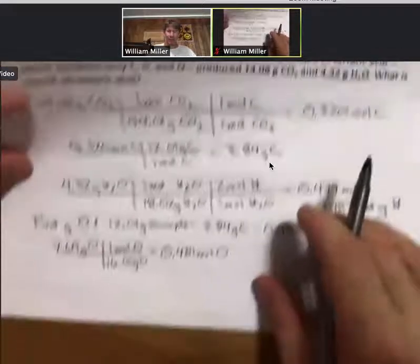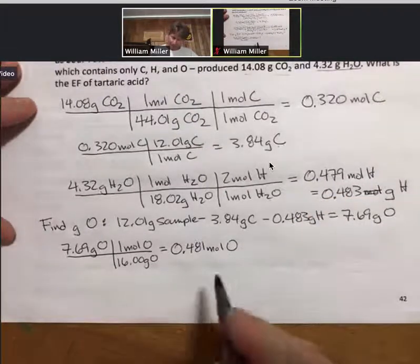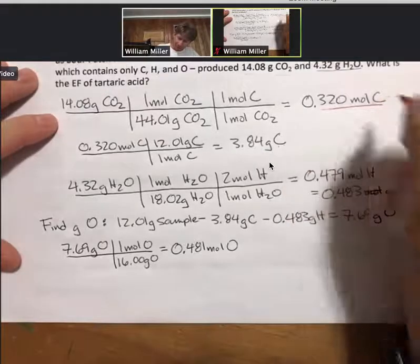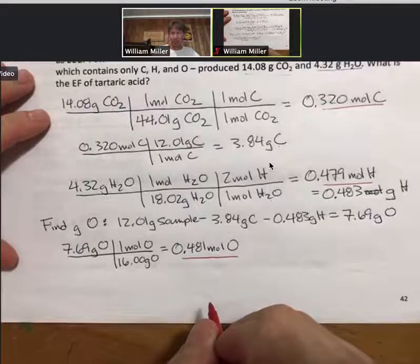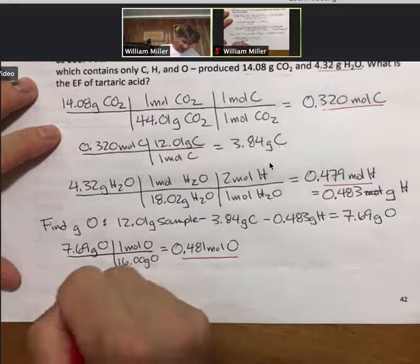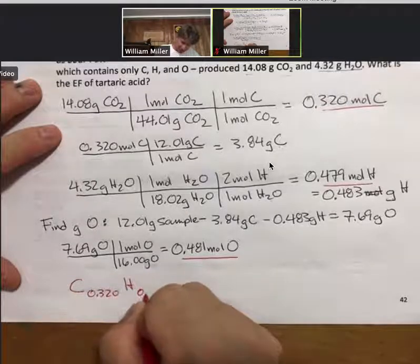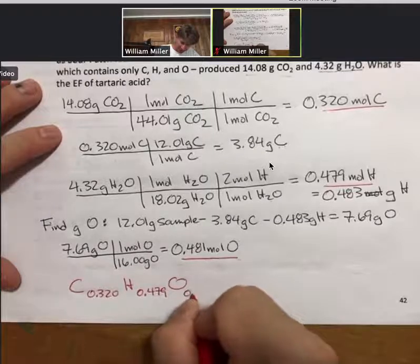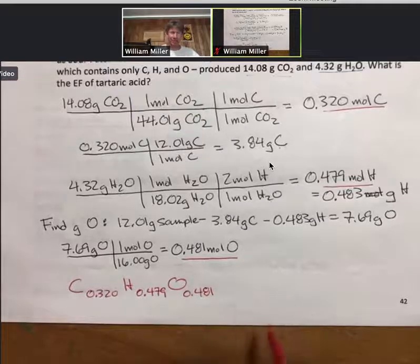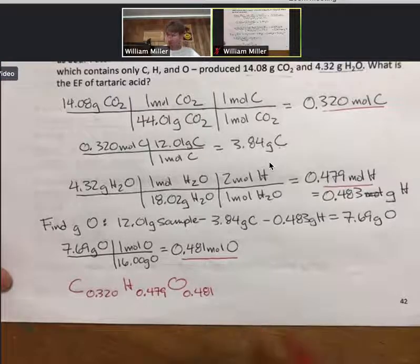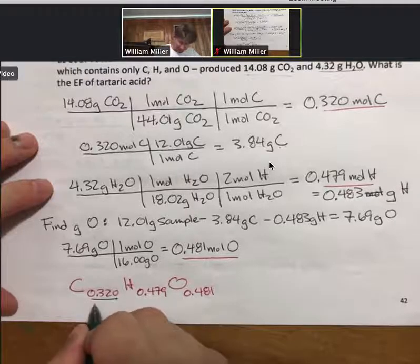Okay, so hearing no other questions right now, I'll keep going. So now we have moles of carbon, moles of hydrogen, and moles of oxygen. I'm going to organize myself here: C 0.320, H 0.479, O 0.481. I know these are not whole numbers, but at least I've got everything in the right place now because my next step is to then divide by the smallest number, which is the 0.320.